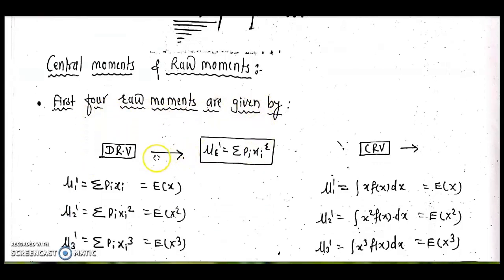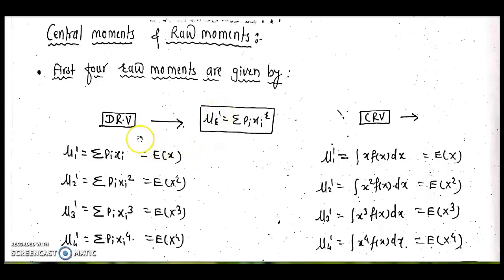There are two formulas for raw moments, since random variables are of two types: discrete and continuous. A discrete random variable has a gap between two values, whereas a continuous random variable covers a range where all values are permissible. To find the first four raw moments, we have specific formulas for each type.